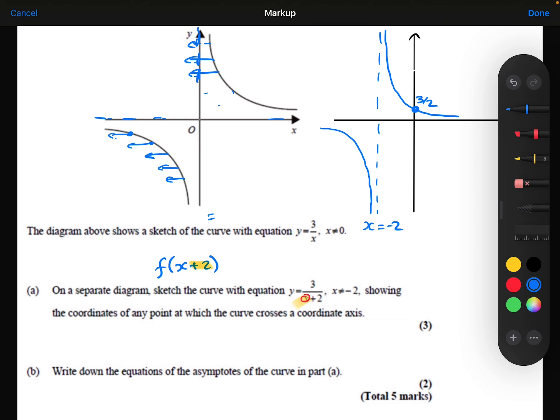Part B says to write down the equations of the asymptotes. Well, I've already marked on the vertical asymptote. I marked that on to help me draw the graph.